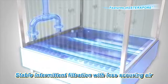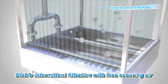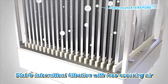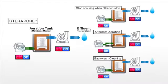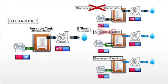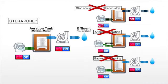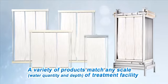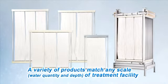Since intermittent filtration in constant low air aeration environments is possible, installation and operation management are simplified. Additional controls and equipment required by other companies — such as controls of aeration during times of filtration stoppages, alternate aeration, and backwash cleaning — are not necessary. SteriPore offers a variety of elements and modules in accordance with the scale of the treatment facility, accommodating various requirements such as water quantity and water depth.